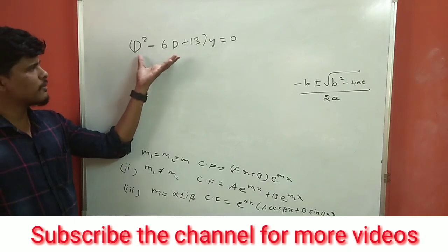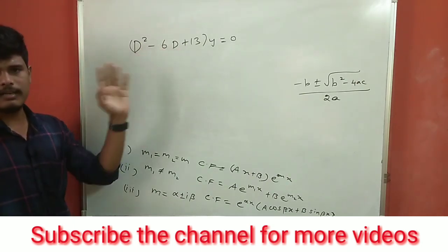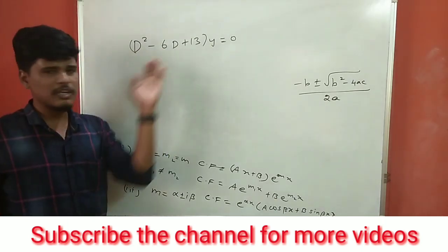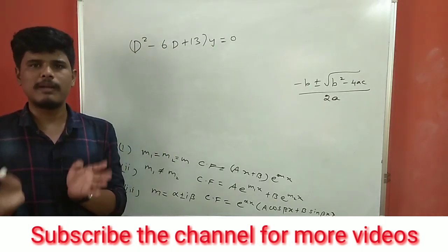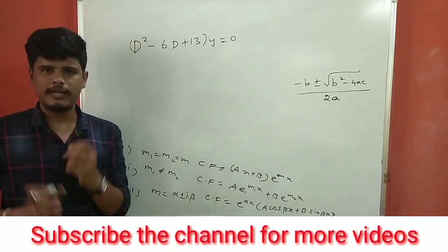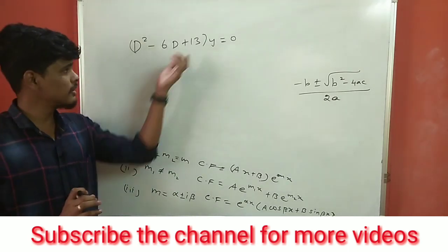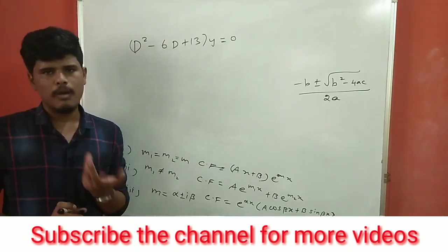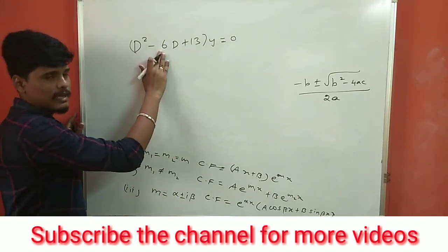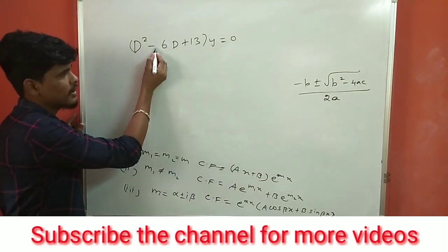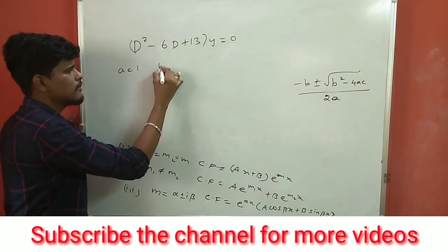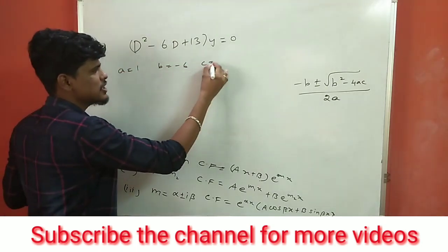Now let's look at another example: d² − 6d + 13 = 0. If you try to multiply two numbers to get 13 and add to get 6 — 13 is a prime number, so the only possibility is 1 × 13. Since we can't factor it normally, we go directly to the quadratic formula. Here a = 1, b = −6, c = 13.